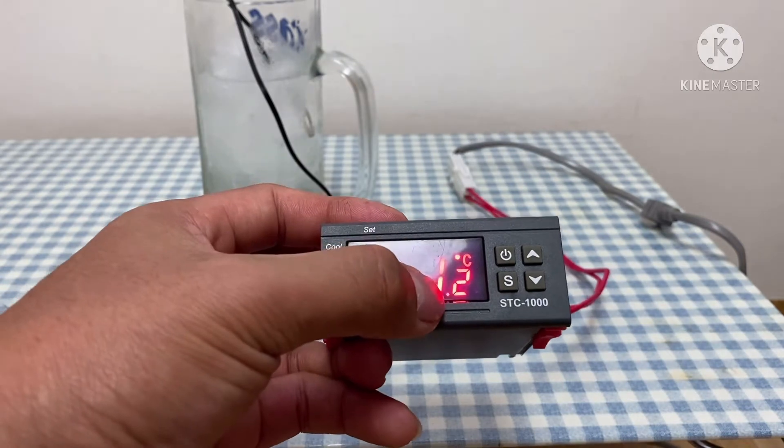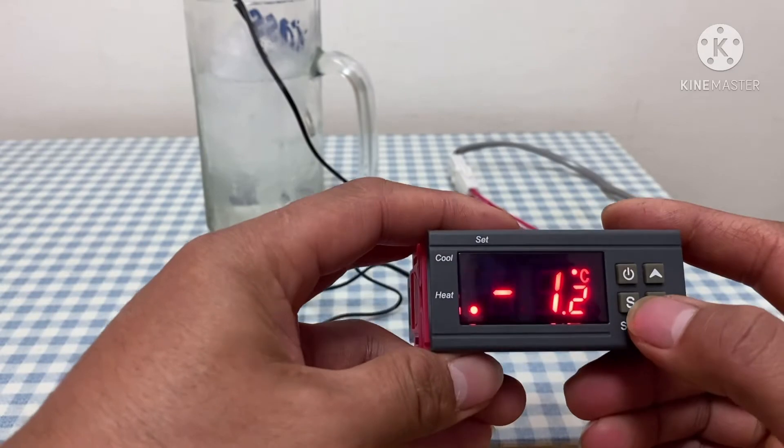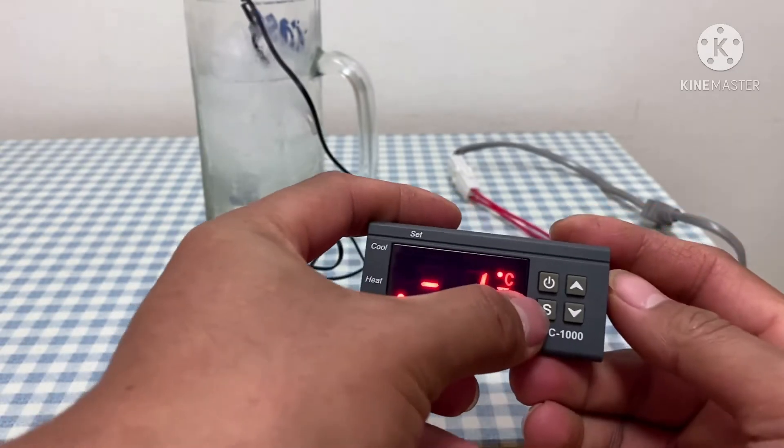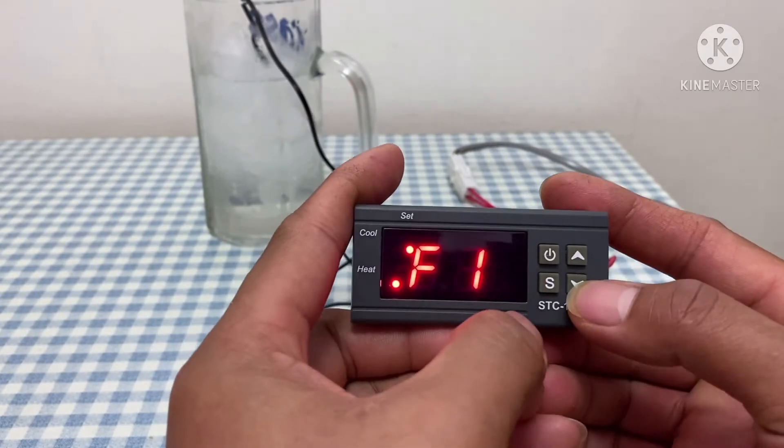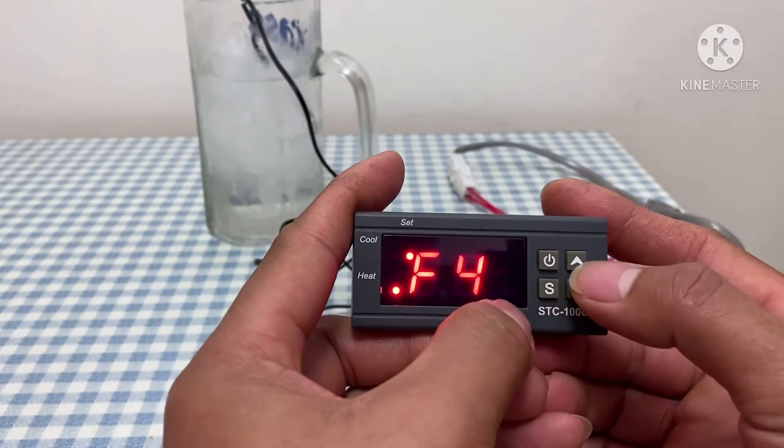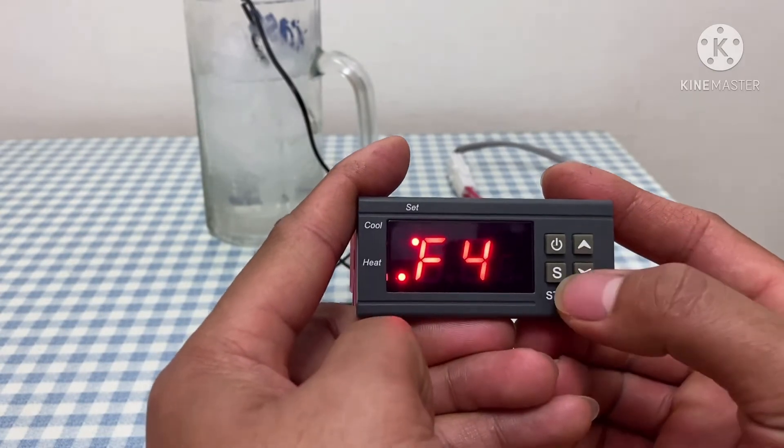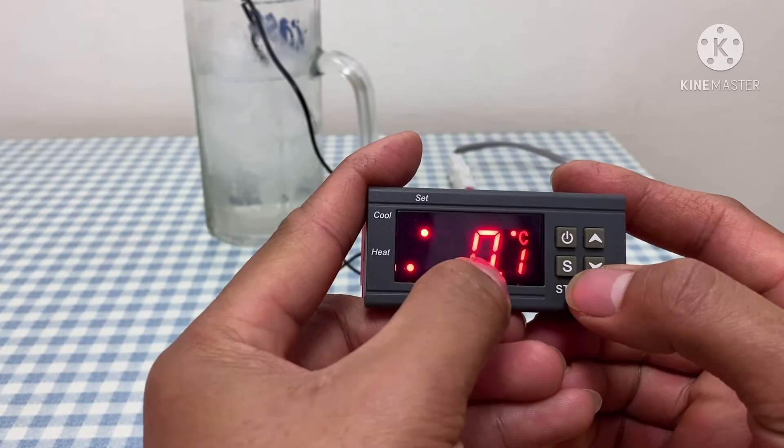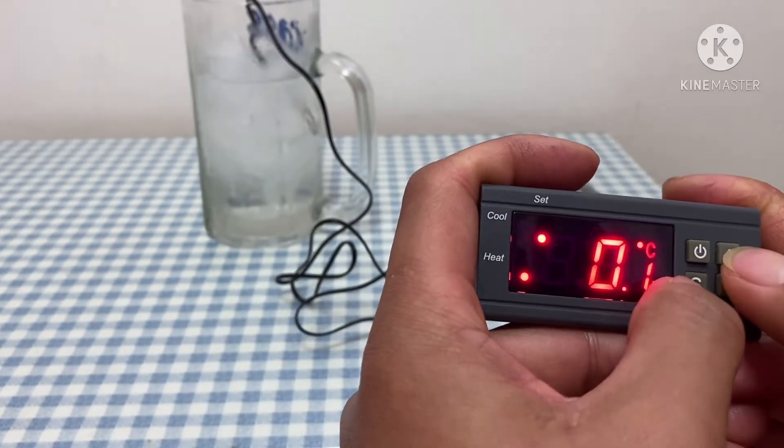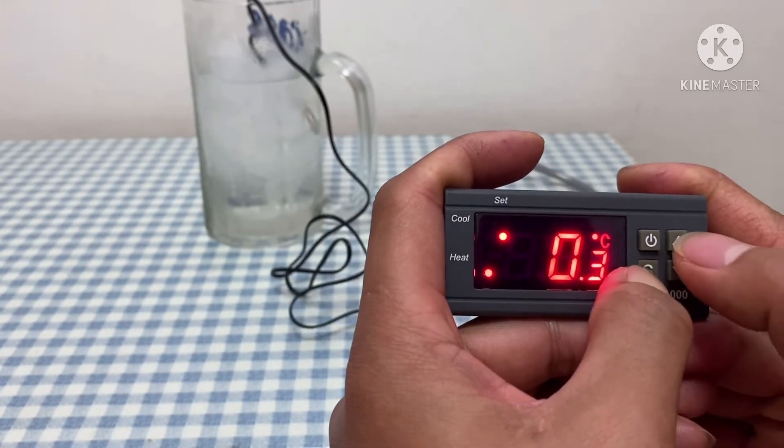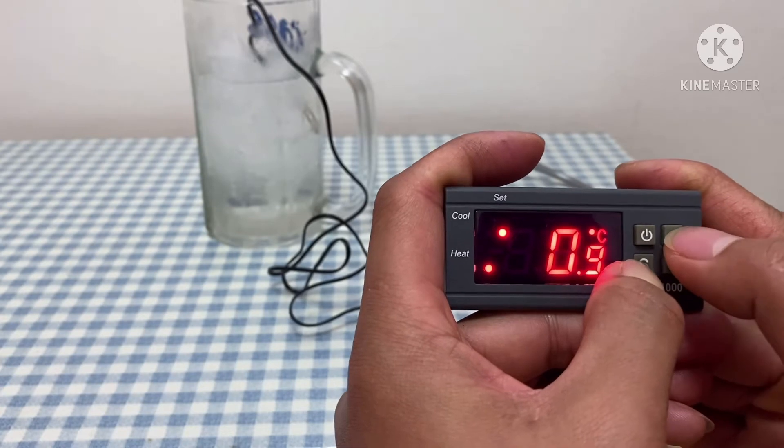So we will go to the setting. Just press this S button for three seconds—S is for setting. I want to show you F1, F2, F3, F4. Press twice, then after that we need to change this. We want to set it for 1.2.